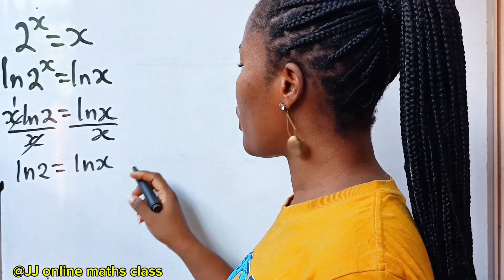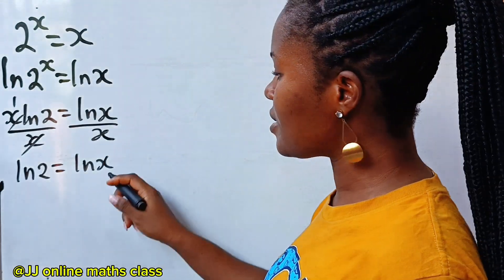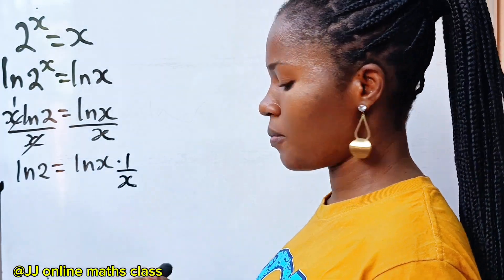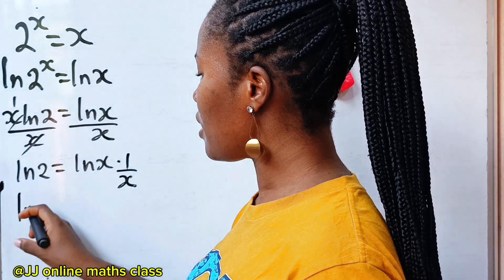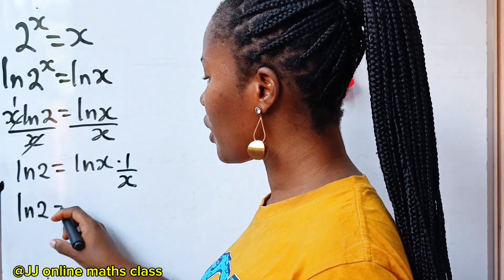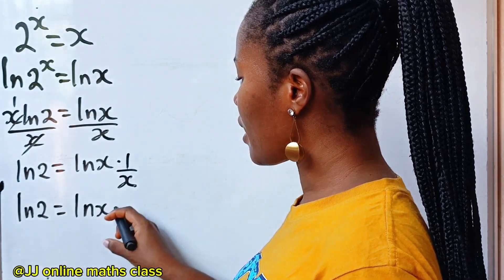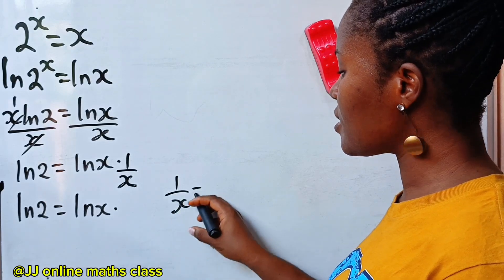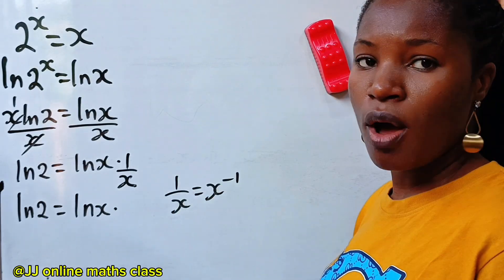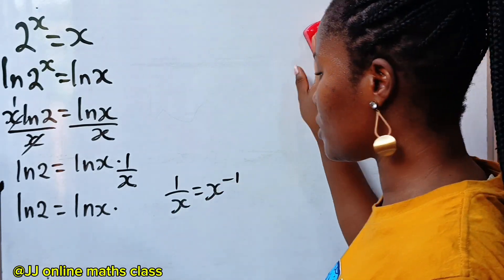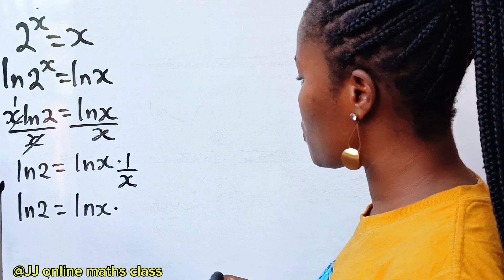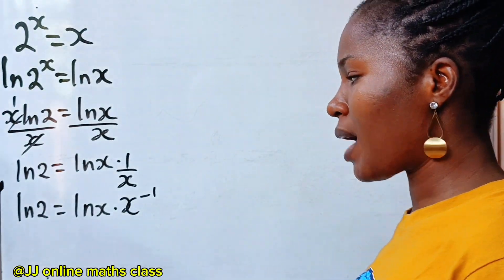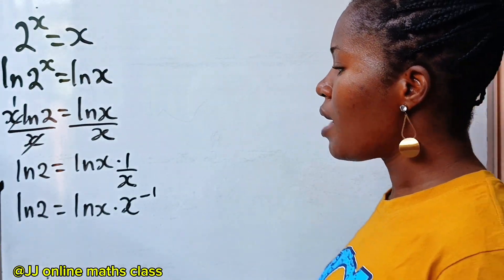Now, remember that this is the same as ln(x) multiplied by 1 over x. And 1 over x is equal to x to the power of minus 1. So that is what we are going to write here: ln(x) multiplied by x to the power of minus 1.